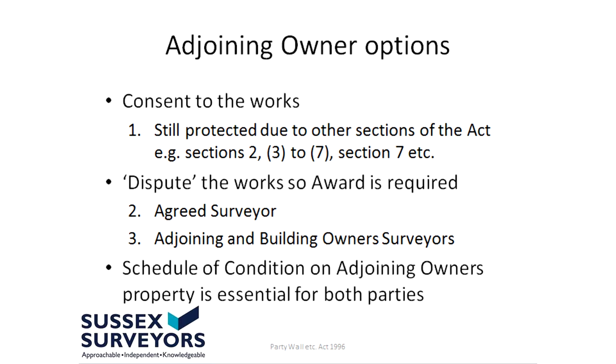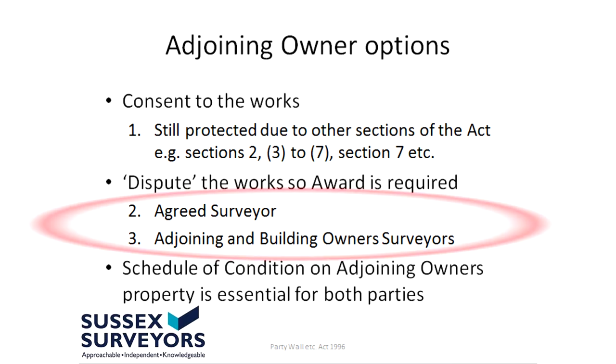The award can be prepared in one of two ways. It can either be prepared by one surveyor acting as the agreed surveyor — in which case that person acts for both the building owner and the adjoining owner — or the building owner can appoint their own surveyor and the adjoining owner also appoints a surveyor, and those two surveyors prepare the award. I often hear people say they must have their own surveyor. The reality is, it doesn't take two surveyors to prepare an award saying the conservatory roof will be protected at all times, or that a temporary fence will be put up to keep the dog in. If the work is relatively simple, there is nothing wrong with having one surveyor acting as the agreed surveyor.